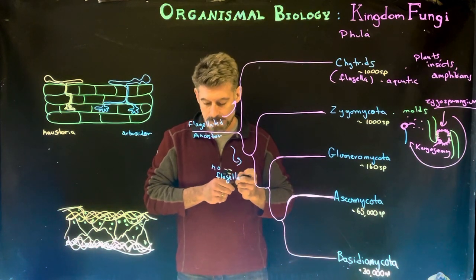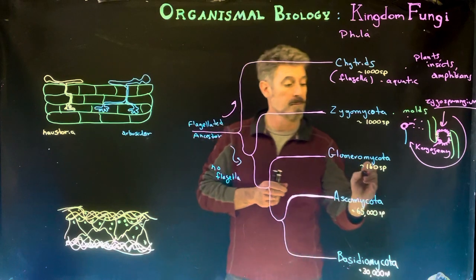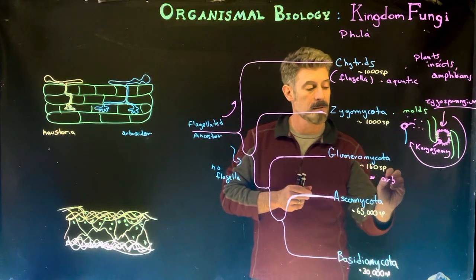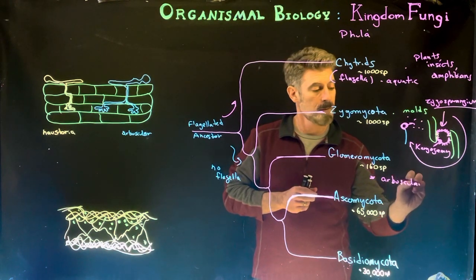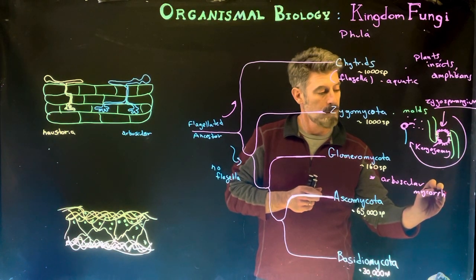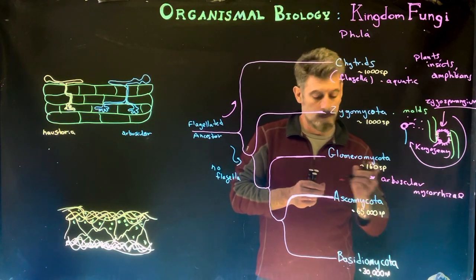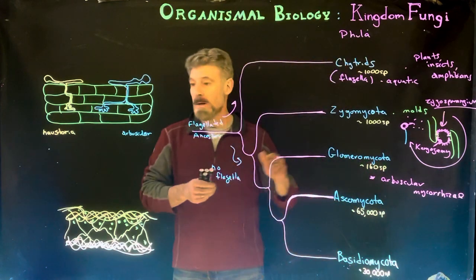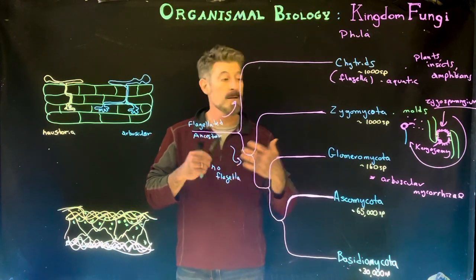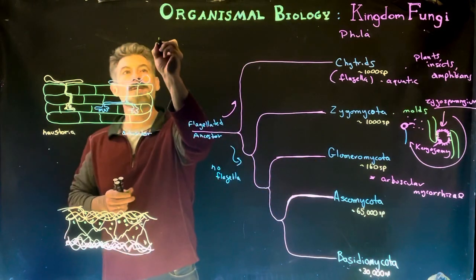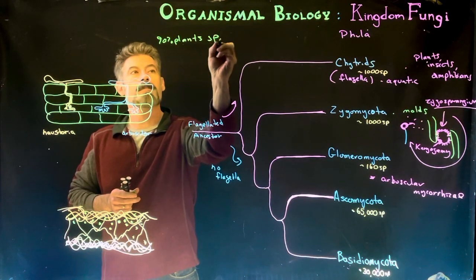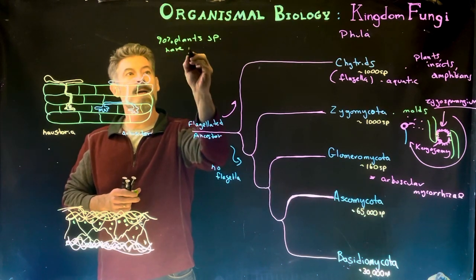The glomeromycota are fairly well-known as ones called arbuscular mycorrhizae. The mycorrhizae are these symbiotic fungi. And they're incredibly important. About 90% of plant species have some type of symbiotic relationship with mycorrhizae fungi.